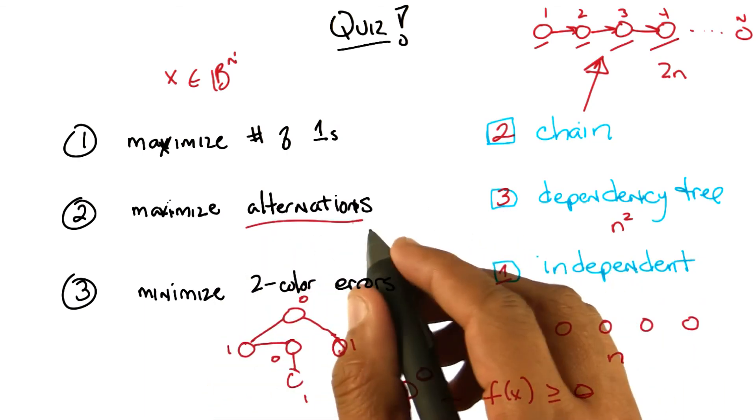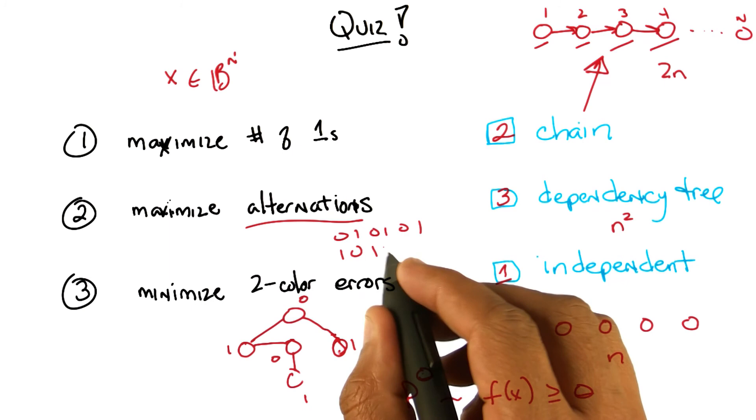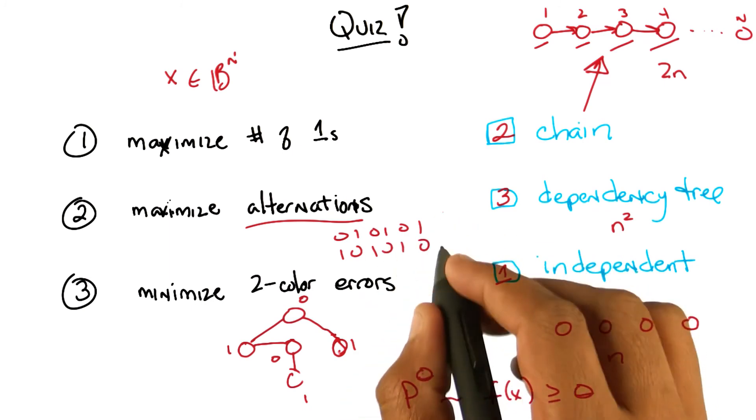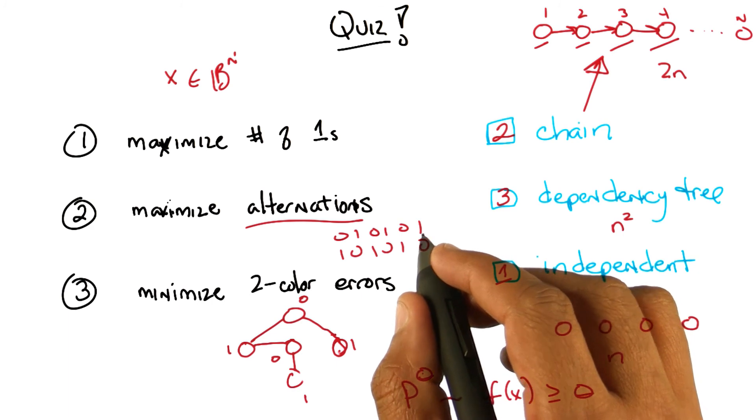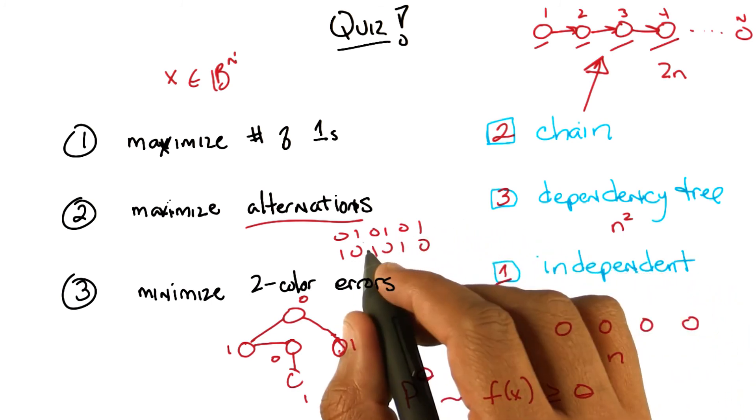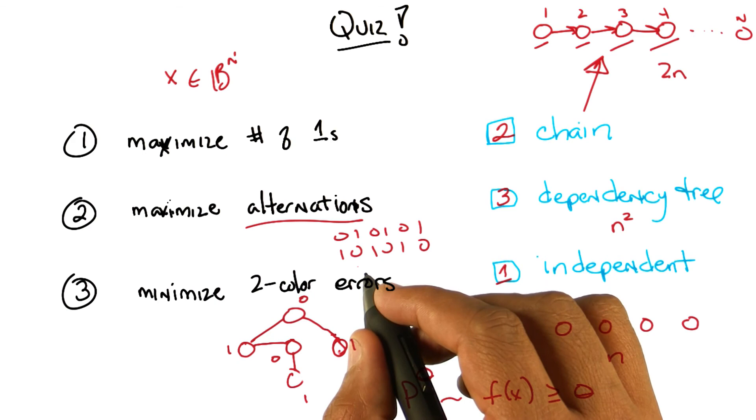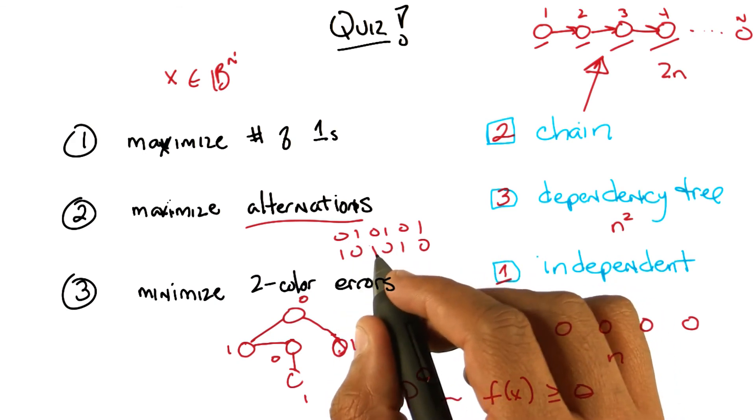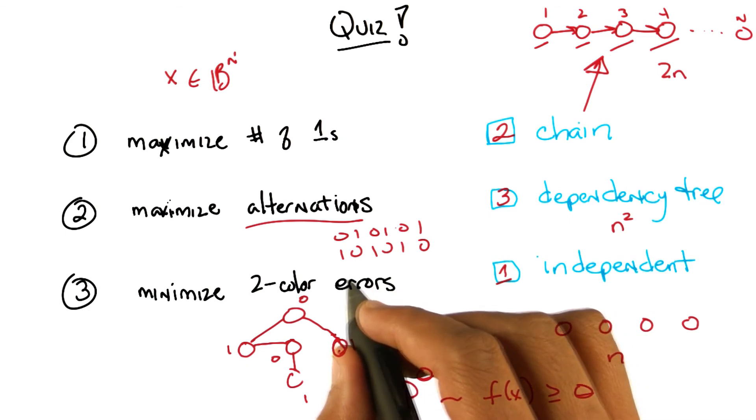So in the maximizing alternations case, you have 0 1 0 1 0 1, or 1 0 1 0 1 0. These are two completely different values. In fact, as you pointed out when I asked you this earlier, they're complementary. But each one has a very simple structure, which is, every bit is different from its neighbor to the, actually both of its neighbors. Every bit is different from its neighbors. And that doesn't matter what their values are. Given the value of one of them, it actually completely determines the value of everything else. Right?